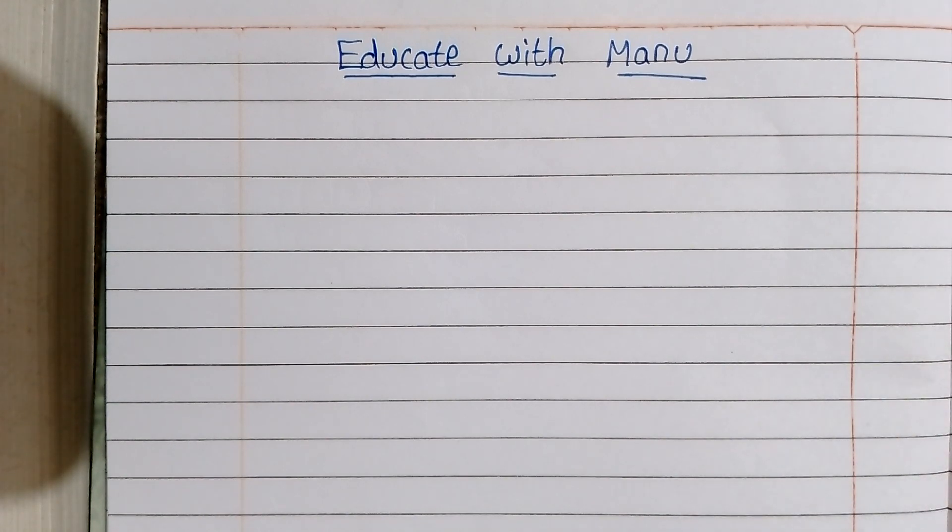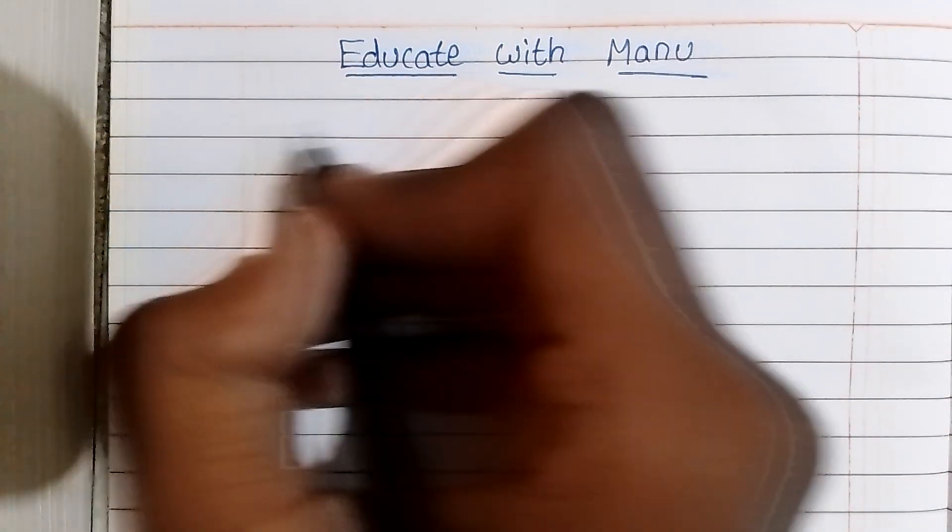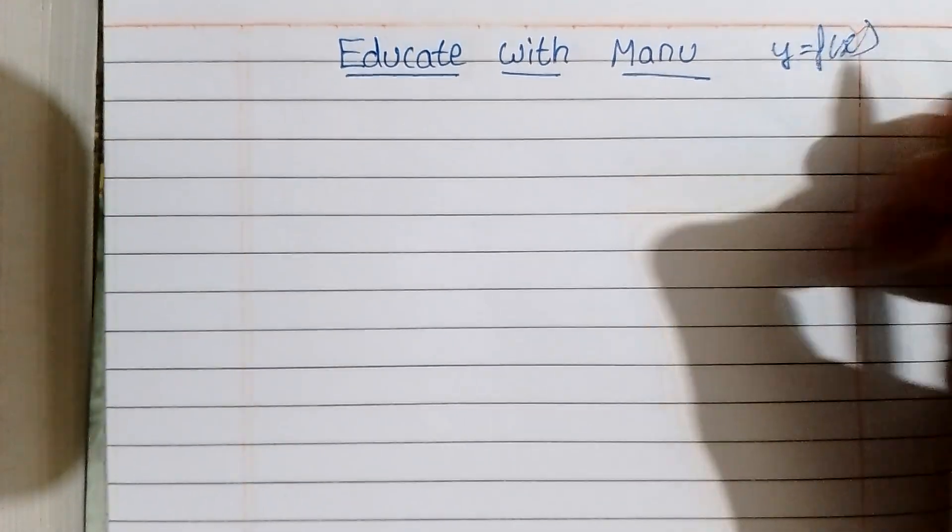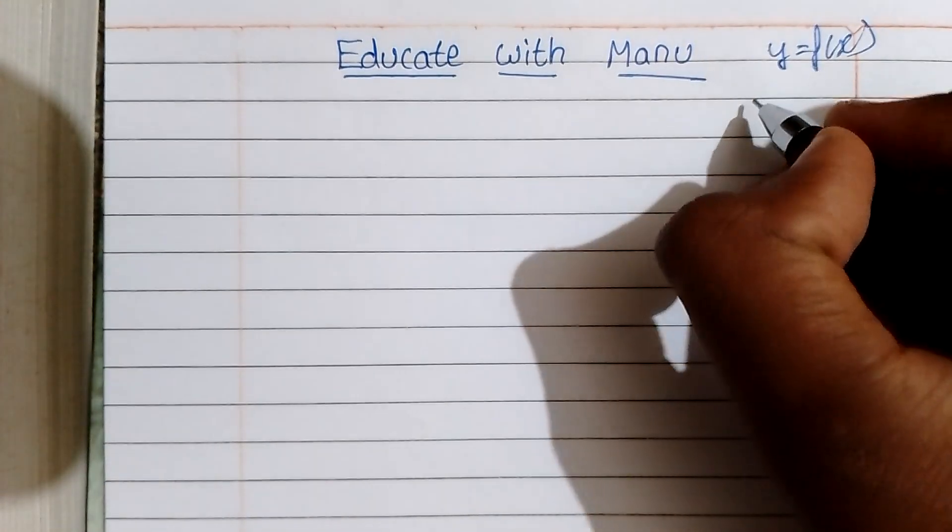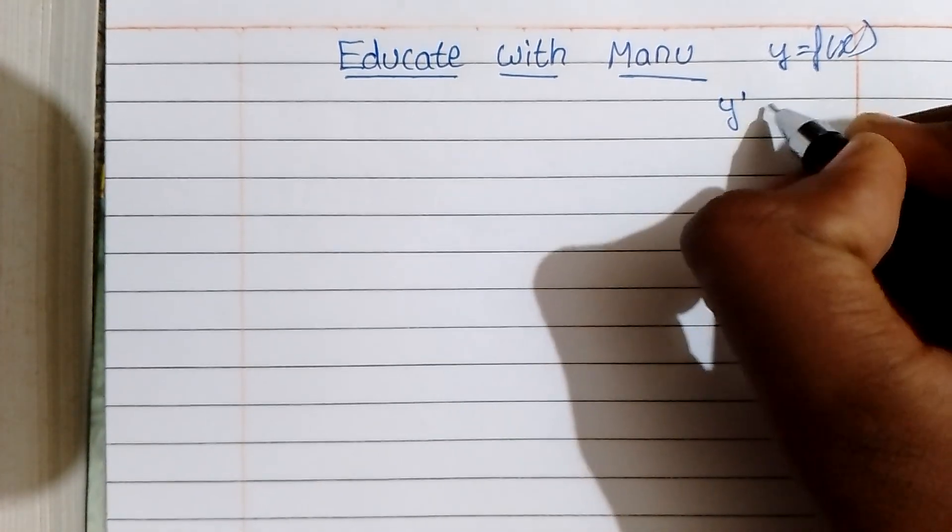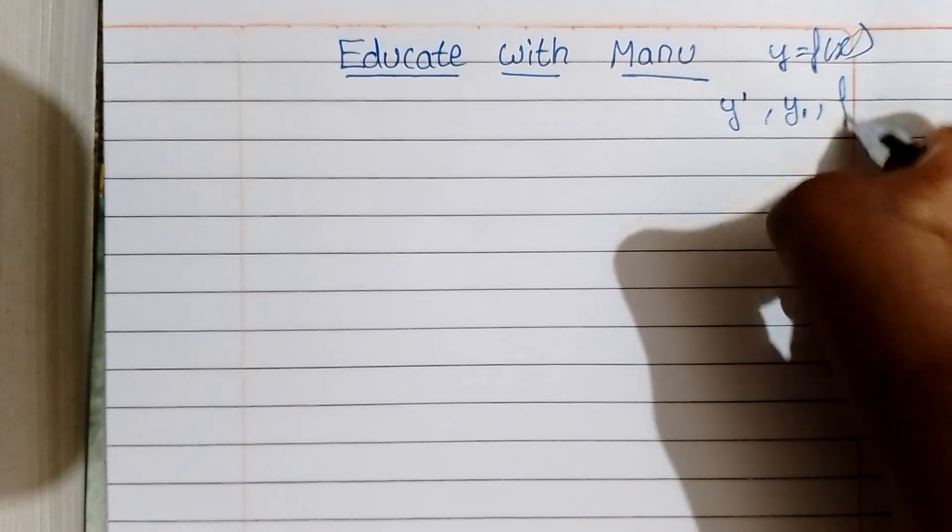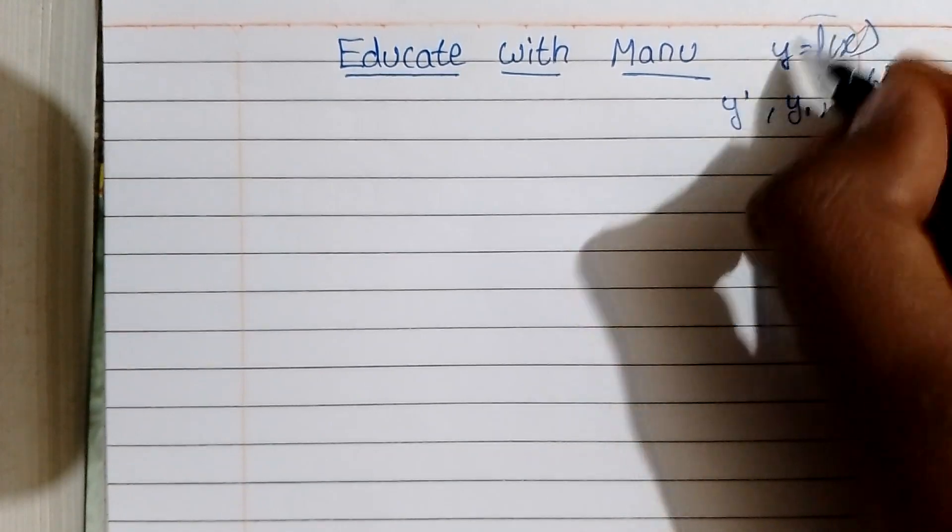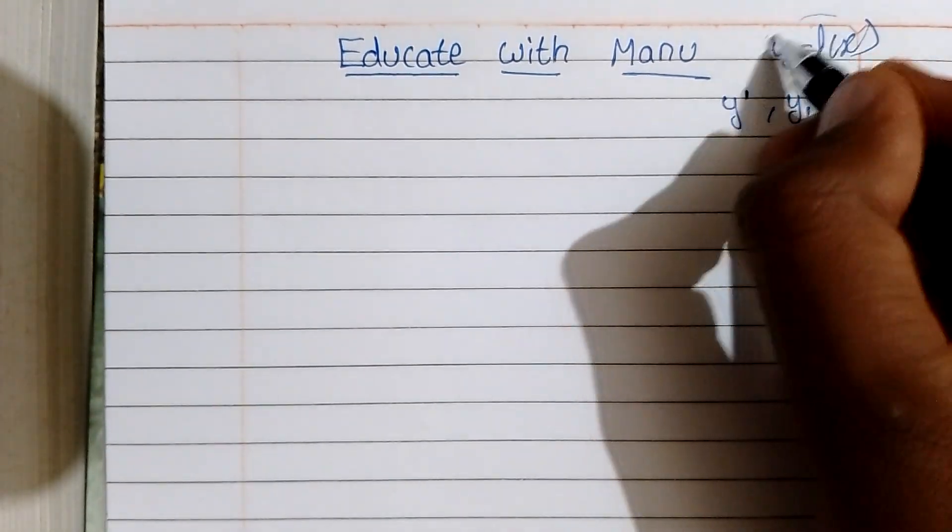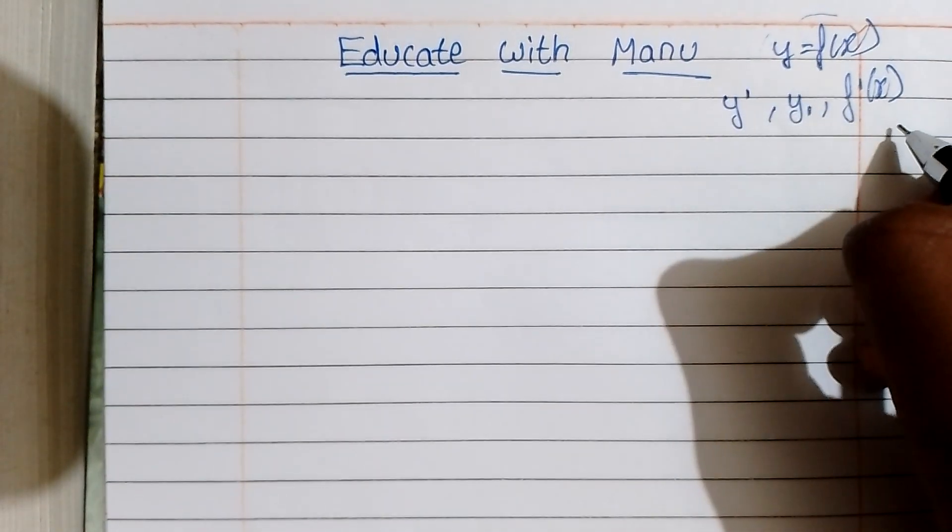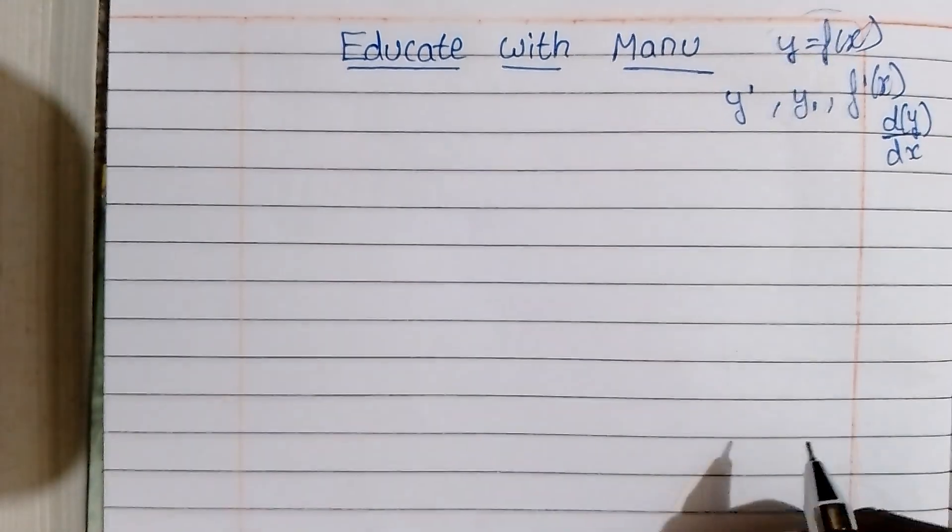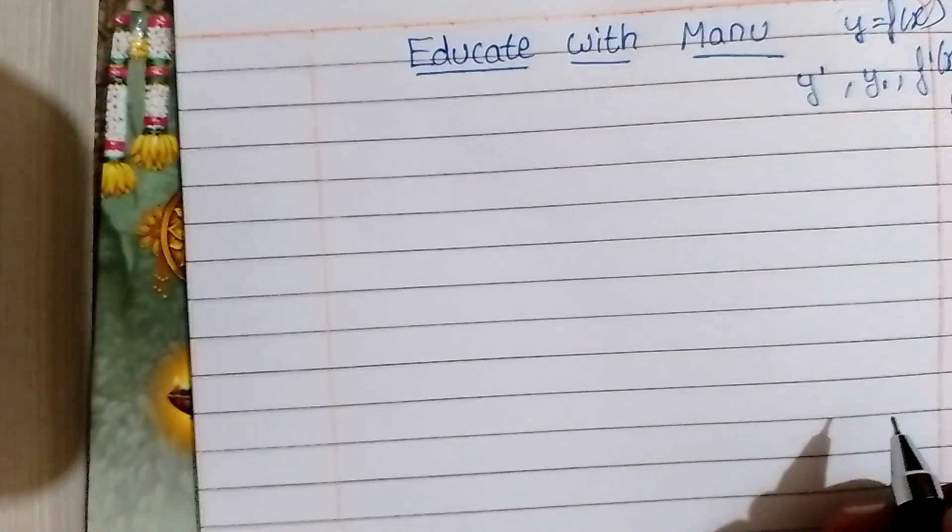Next video I will explain all the changes. If y equals f(x), the derivative can be written as y dash or f dash. There is a derivative here. We can put dy/dx. We will differentiate y with respect to x.